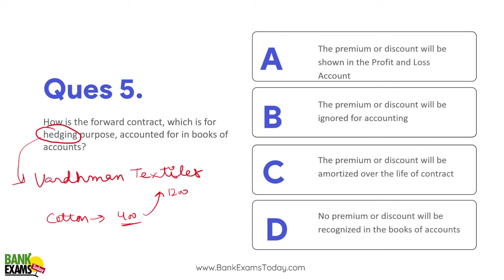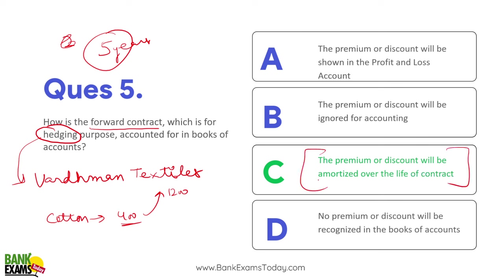In accounting, how do we treat this? If they make a 2-year agreement, the premium is divided over 2 years. I'm talking about forward contracts, not futures — a forward can involve a third party and exchange is not involved. The premium or discount will be amortized over the life of the contract. For example, if ₹5 lakh premium is paid for 5 years, ₹1 lakh per year is shown as an expense in the profit and loss account.